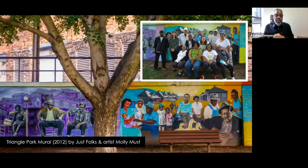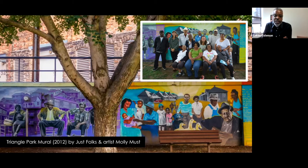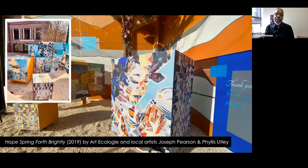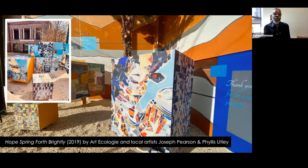Those in Asheville might be familiar with the mural that's in Triangle Park. This is located downtown in a historic area also known as the Block, which was the business district for the African-American community here in Asheville for quite a long time. This mural depicts scenes and individuals relevant to Asheville's Black history. Another local piece is called Hope Springs Forth Brightening, done a couple of years ago by Art Ecology, as well as local artist Joseph Pearson, a painter and illustrator, and Phyllis Utley, who among many things is also a poet. This piece brought together many art forms and lots of public input to celebrate the work and lived experience of African-Americans here in Asheville.